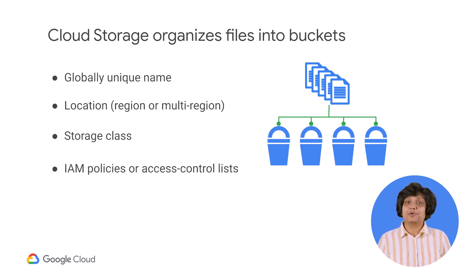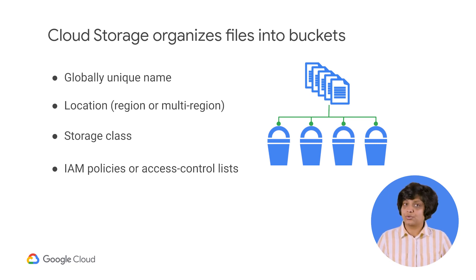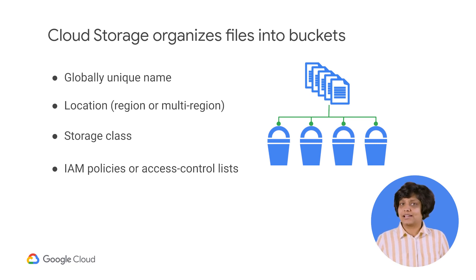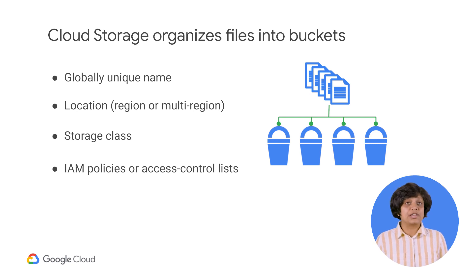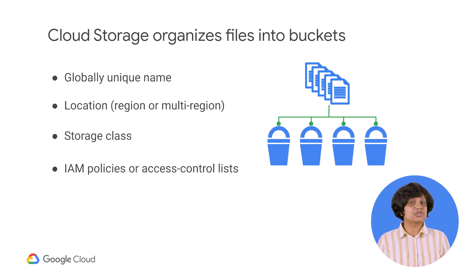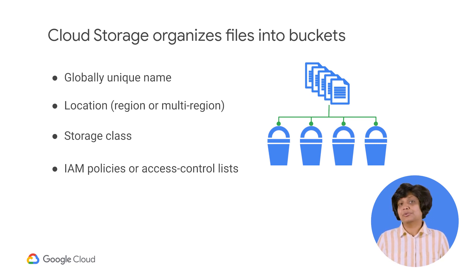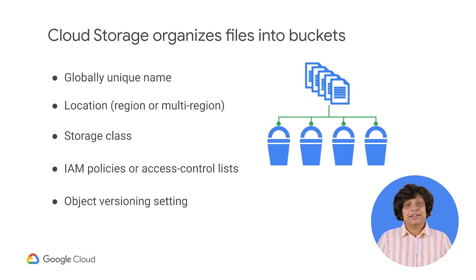Roles are inherited from project to bucket to object. If you need finer control, you can create access control lists. ACLs define who has access to your bucket and objects, as well as what level of access they have. Each ACL consists of two pieces of information: a scope, which defines who can perform the specified actions, and a permission, which defines what action can be performed — for example, read or write.